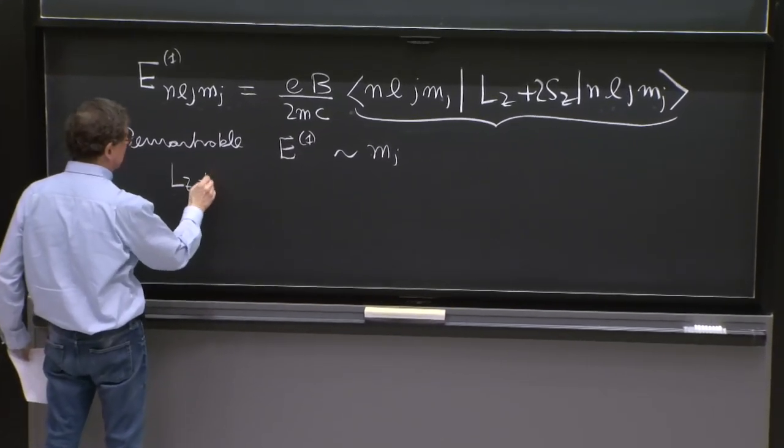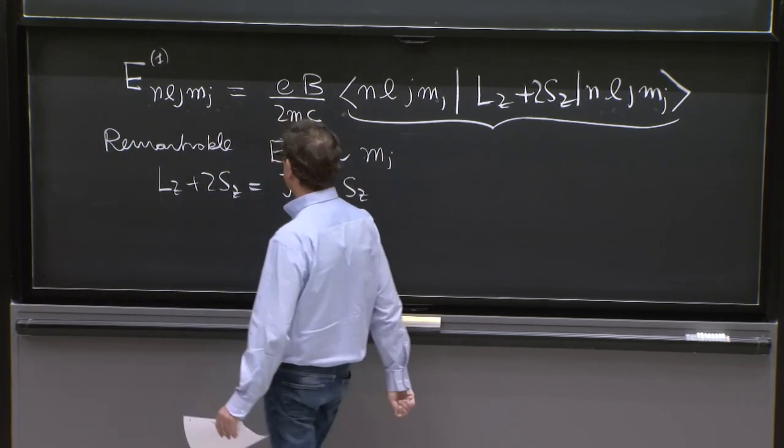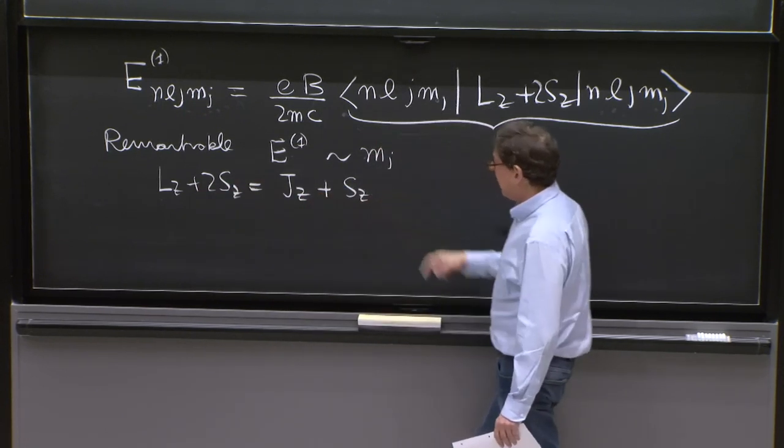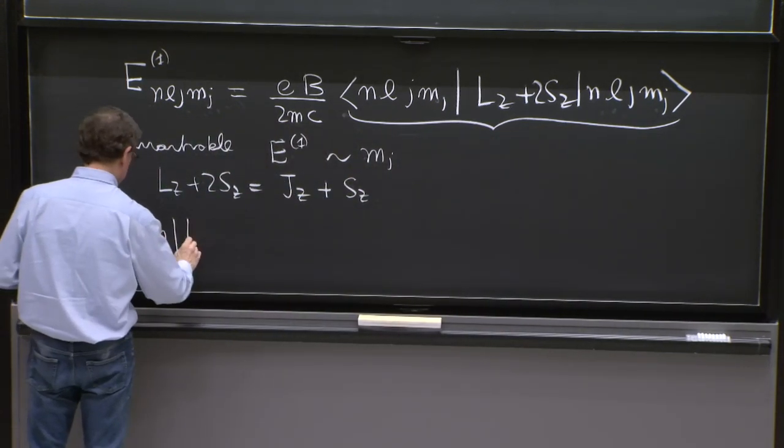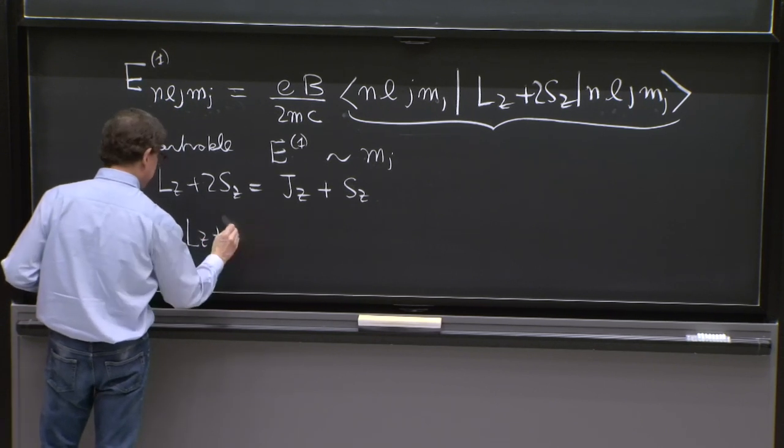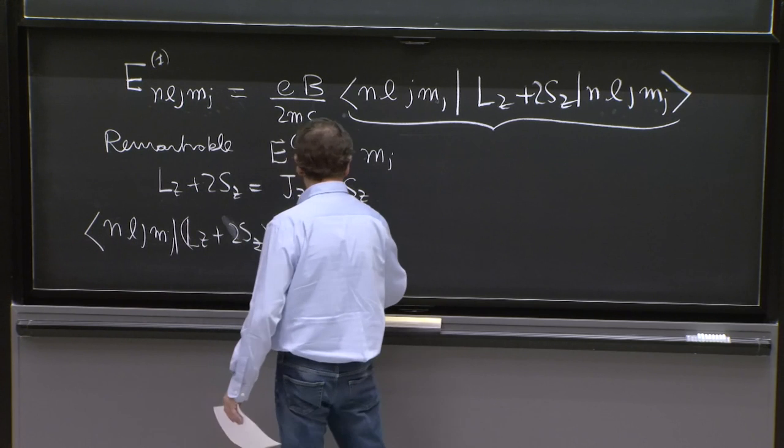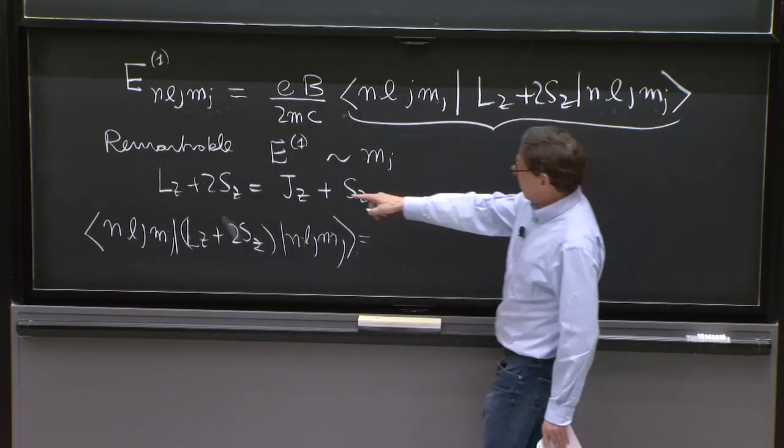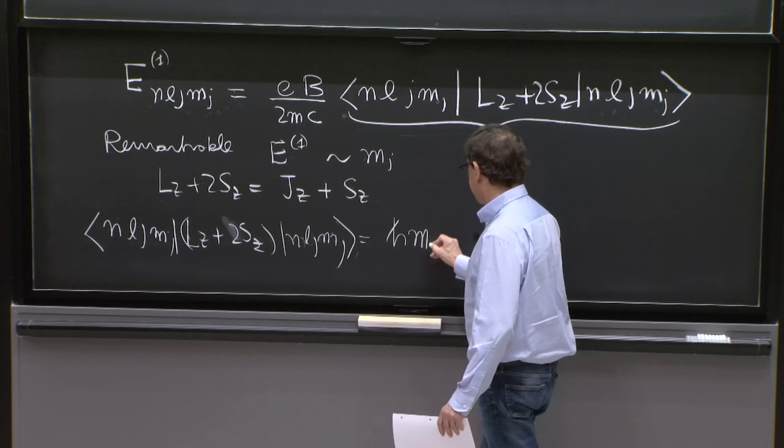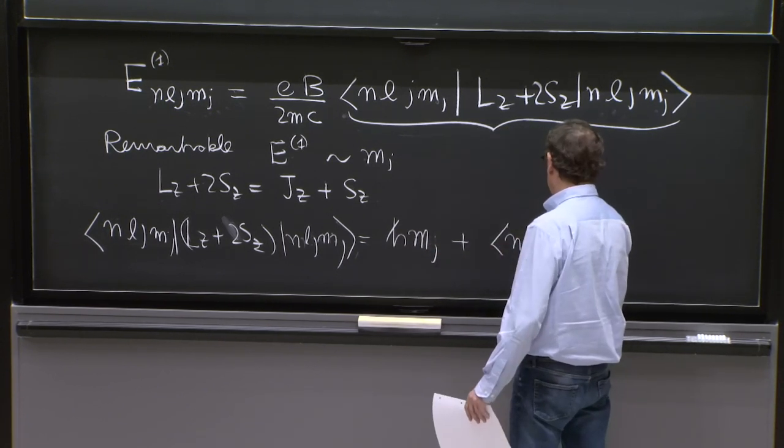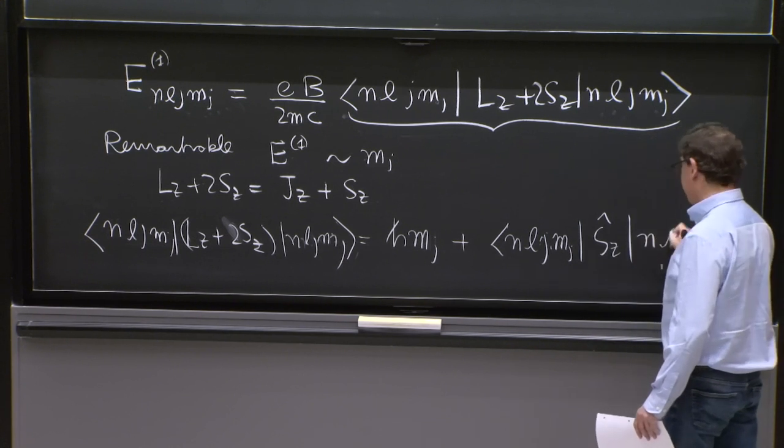So we want to understand this matrix element. And there's a little thing we can do. Notice that Lz plus 2Sz is equal to Jz plus Sz. You can take one of the Sz's and complete Jz. And you're left with that. So the matrix element NLJMj Lz plus 2Sz NLJMj is equal, well, if you have a Jz, that gives you just something proportional to h-bar Mj plus NLJMj Sz NLJMj.